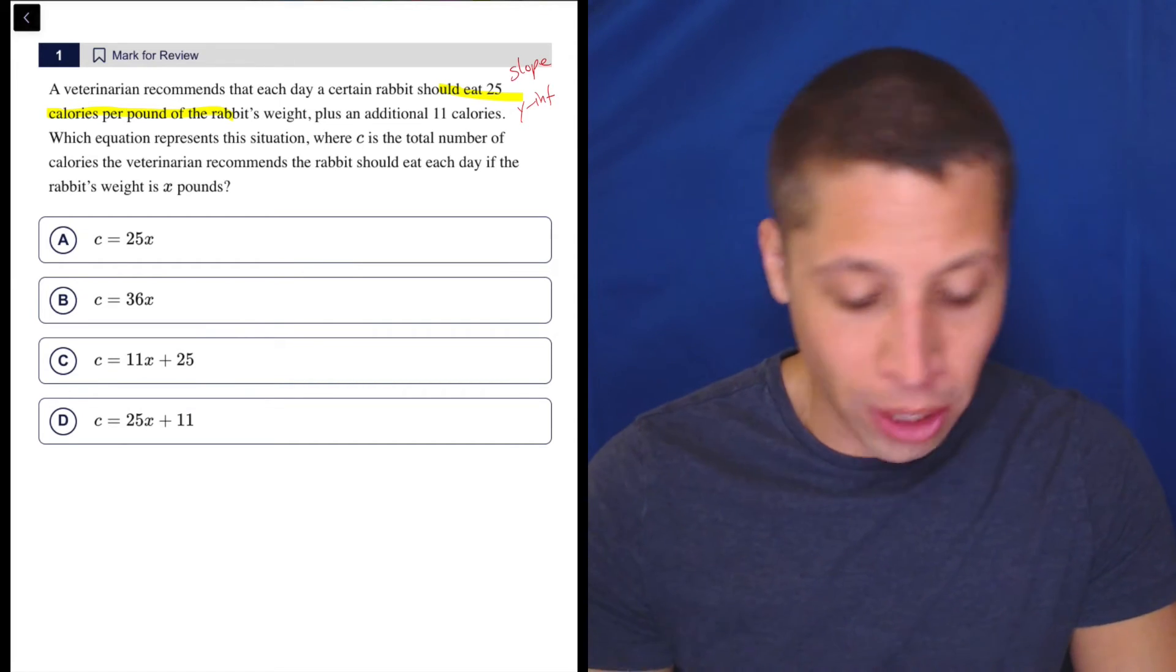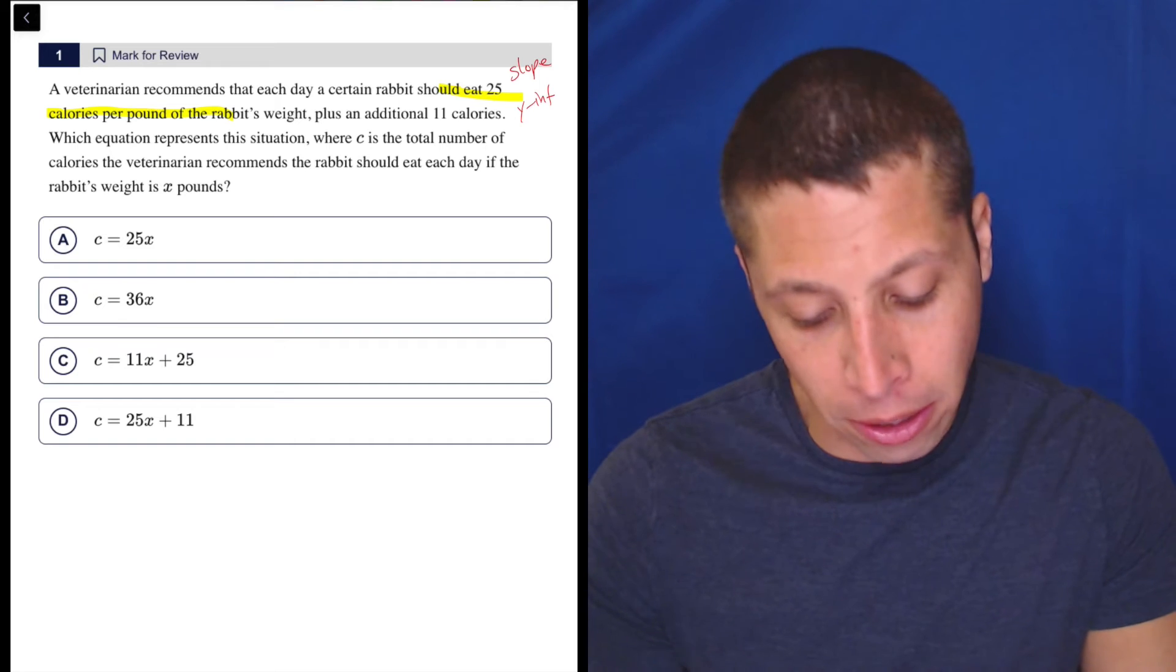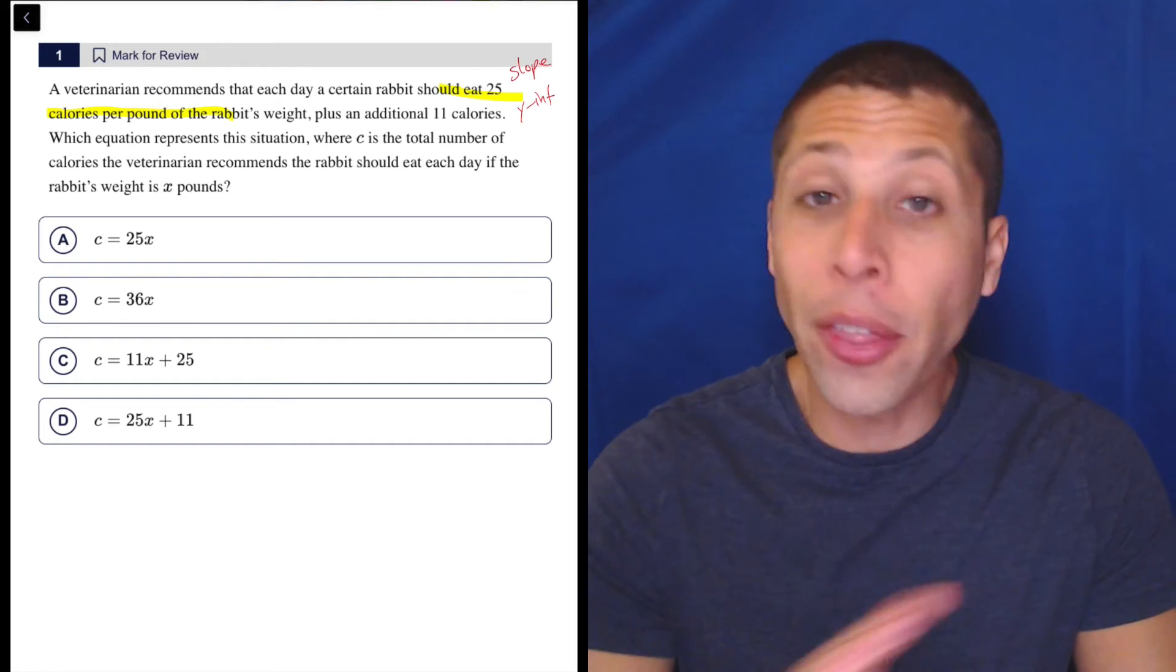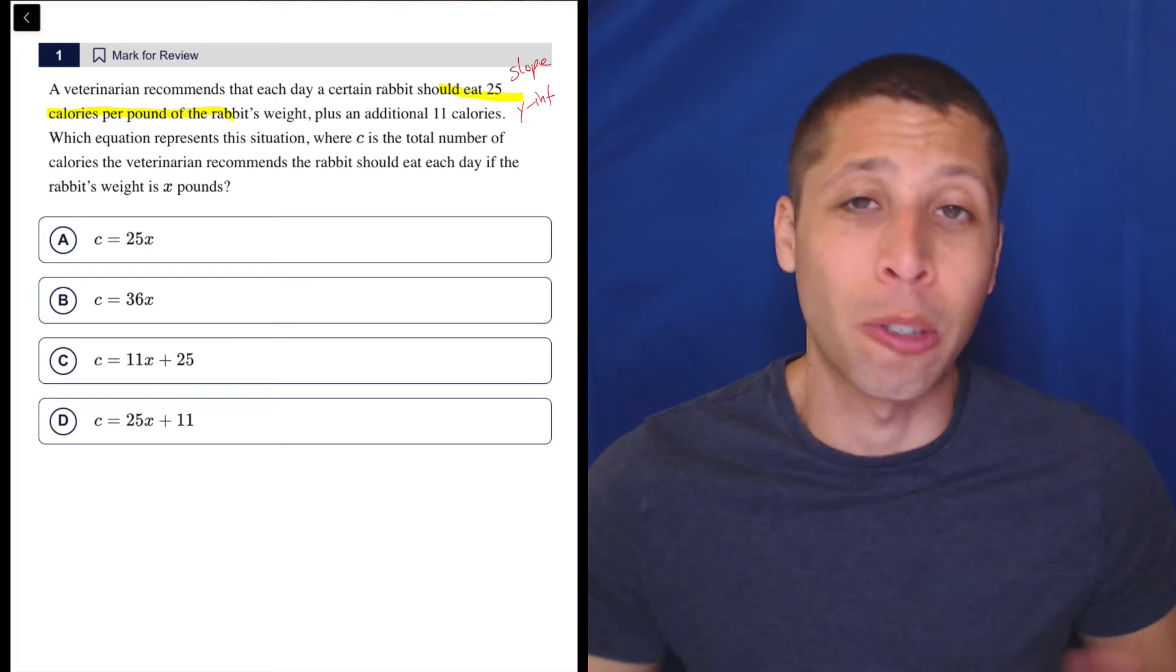Which equation represents a situation where c is the total number of calories the veterinarian recommends the rabbit should eat each day if the rabbit's weight is x pounds. Nothing crazy here because it's the first question in the first module. It's supposed to be easy.